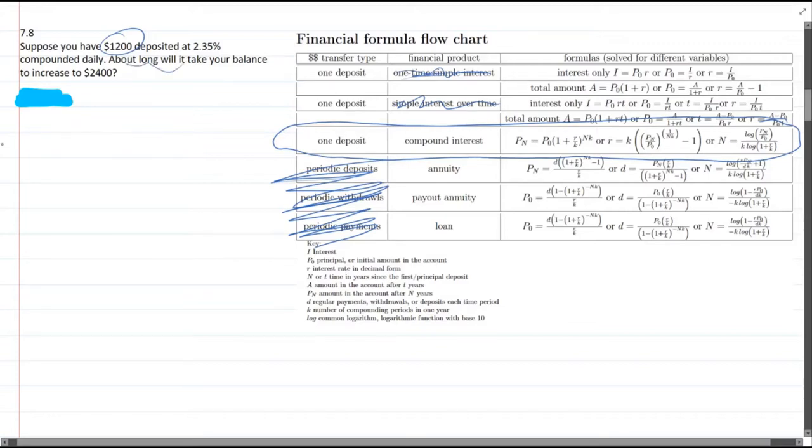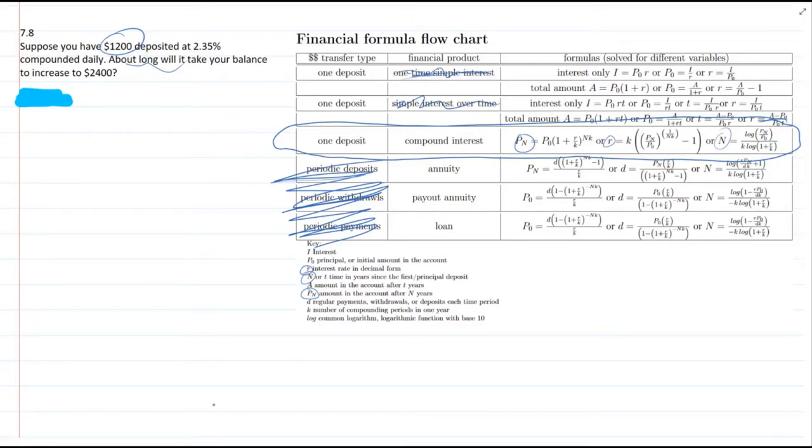How long will it take for the balance? We want to know about time. The first one is solved for P_n, which is the final amount. The second one is solved for r, which is the rate. We already know the rate. The last one is solved for n, which is the time in years since the first principal deposit. So we want the third option.